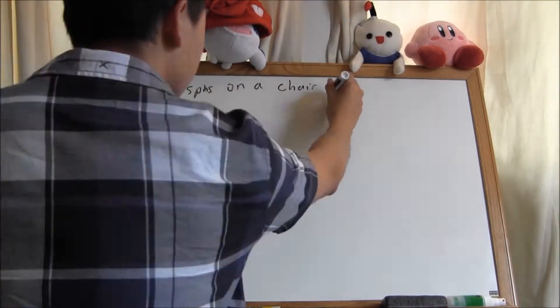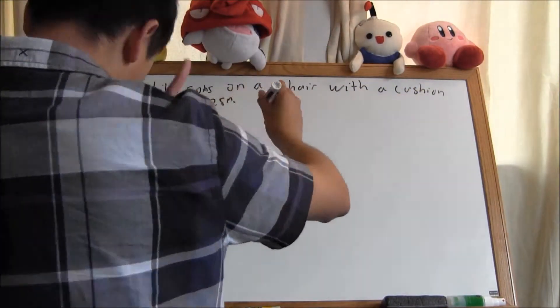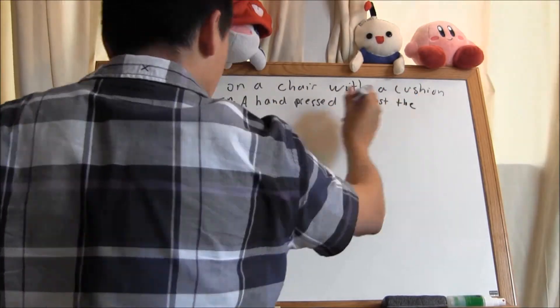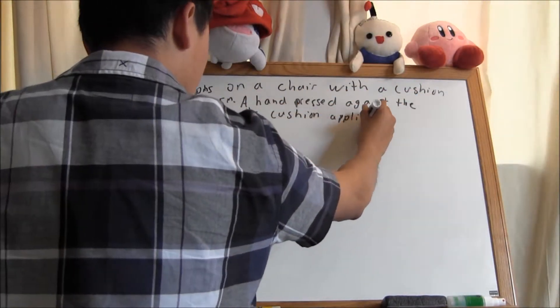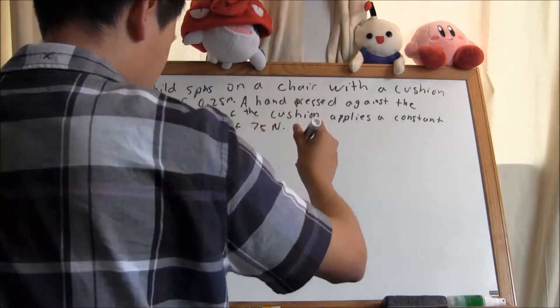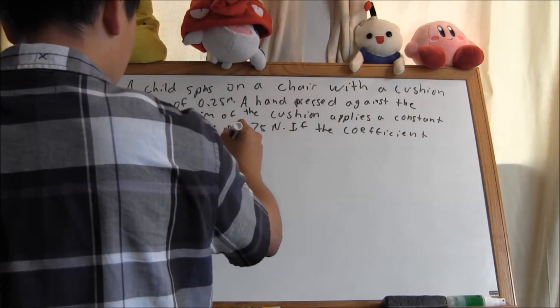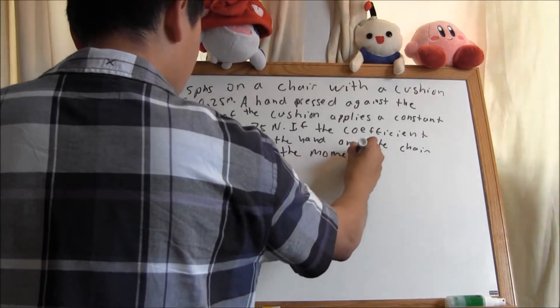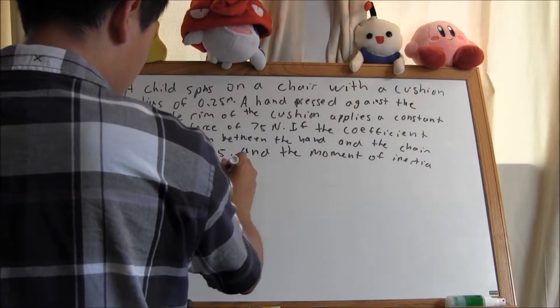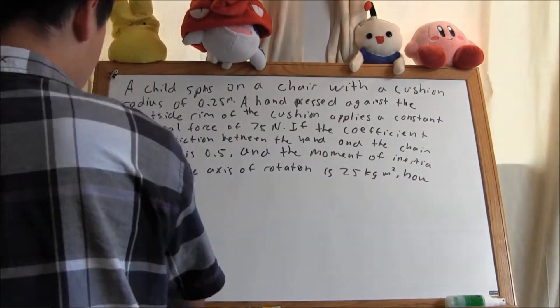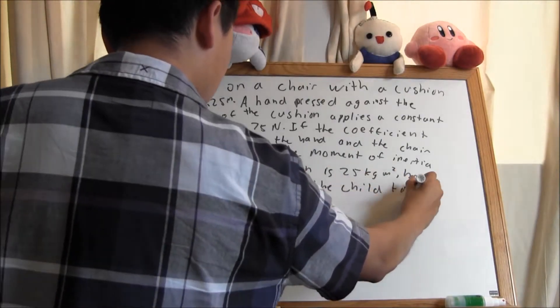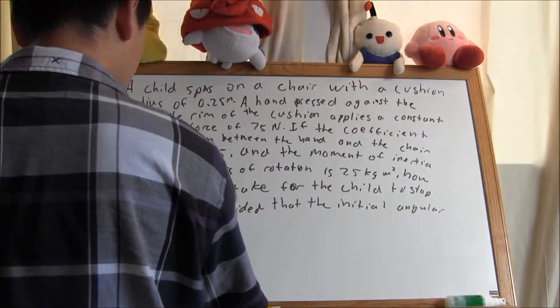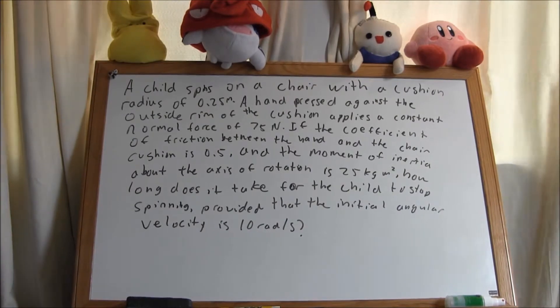A child spins on a chair with a cushion radius of 0.25 meters. The hand pressed against the outside rim of the cushion applies a constant normal force of 75 newtons. If the coefficient of friction between the hand and the chair is 0.5, and the moment of inertia of the child and the chair about the axis of rotation is 25 kg meters squared, how long does it take for the child to stop spinning provided that its initial angular velocity is 10 radians per second?